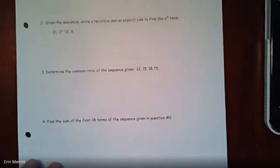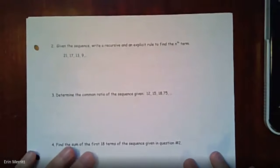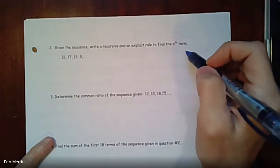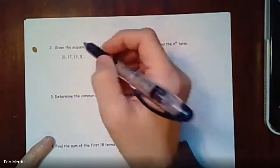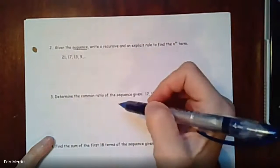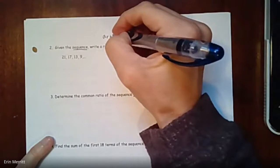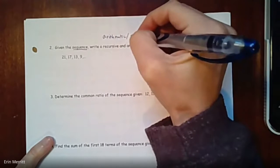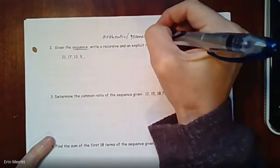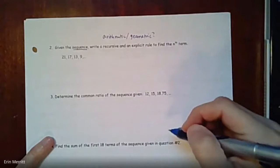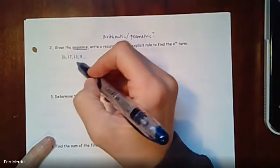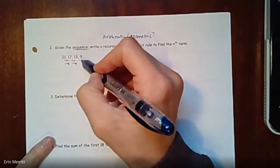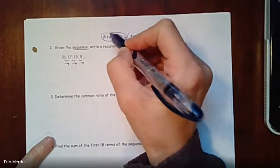On the next page there's a couple more I wanted to take a look at. It says given the sequence, write a recursive and an explicit rule to find the nth term. Since we don't know what type of sequence it is, you have to be thinking - is it arithmetic or is it geometric?